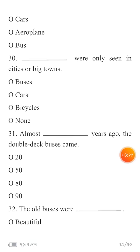MCQ 30: 'Blank were only seen in cities or big towns.' These MCQs are taken from unit number four. What was it that could only be seen in big towns and cities? Your options are: buses, cars, bicycles, and none — where 'none' means none of the above option is correct.